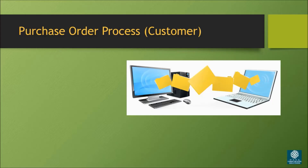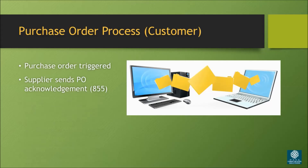Now let's look at the purchase order process. This is considered supplier-side EDI. In this scenario, you're the customer. When your ERP is low on supplies, either it triggers a purchase order, or customer service manually triggers one. Once the supplier receives the purchase order, they send back a purchase order acknowledgement, 855, to you. The 855 can accept or reject the entire order. It also can accept with exceptions — for example, the product may arrive late, or they might not have the requested quantity.